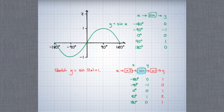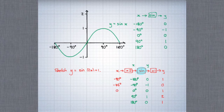The x-coordinates also need to change, and they all need to be half what they were before. So where before the x-coordinate was minus 180, now it will be minus 90. Where before it was minus 90, now it will be minus 45, and so on. The x-coordinates all need to be half what they were before, so that when they get doubled, we have the same inputs to the sine function.